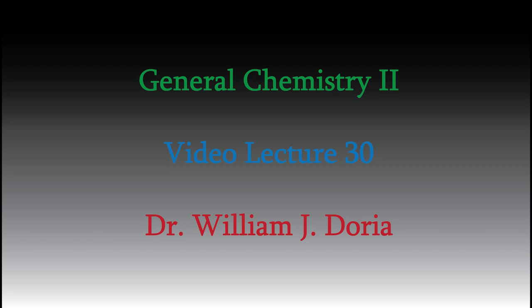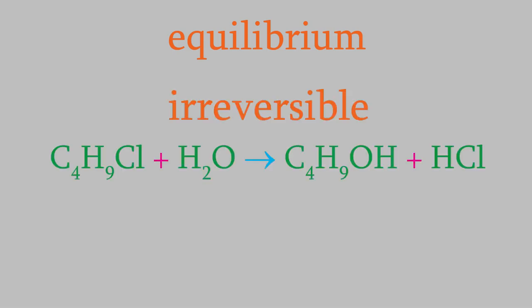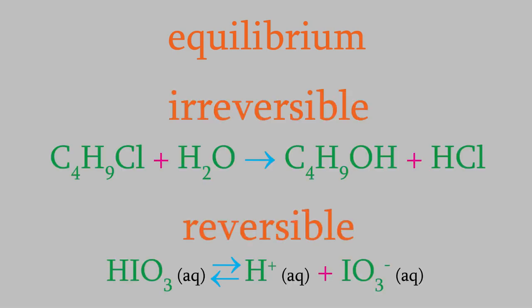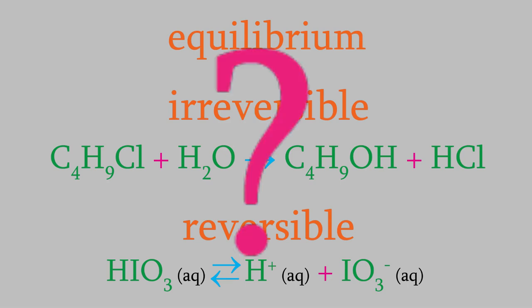Hi, and welcome back to my videos for General Chemistry 2. Today I want to wrap up our discussion of entropy and energy by tying it back to equilibrium, a topic we discussed for several weeks earlier in the course. One question we never answered when we talked about equilibrium is why some chemical reactions are irreversible, but others are reversible and can occur in both backward and forward directions. As we'll see today, the Gibbs free energy can give us an answer to that question.